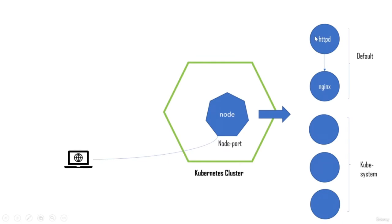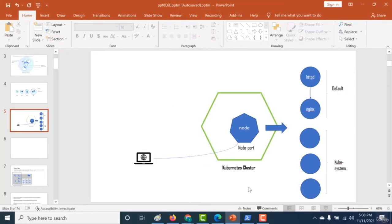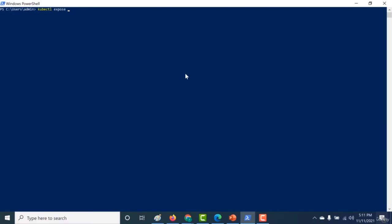In our previous example, we used the httpd pod to connect to our nginx pod using the cluster IP. This is only possible because both pods were within the same Kubernetes cluster. If you want to connect to your nginx server from an outside network, there are a few methods: using node port and using a load balancer. In this example, we'll talk about how to use node port. To create a node port, run the kubectl expose command, expose the node-app deployment, assign port 8080 for the pod, target port 8080, and add the type parameter as NodePort.